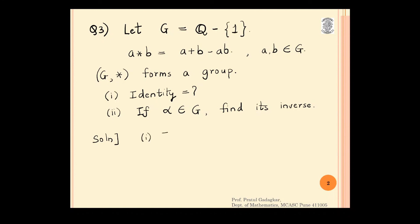If E is identity then a star identity will be equal to a again. Therefore, a plus e minus ae will be equal to a. This step comes because of this formula of a star b. Now we can simply cancel this a and a because a is a rational number which is not 1. Remember a is not equal to 1. I am sorry I should have written here ae. Let me go to the next page.